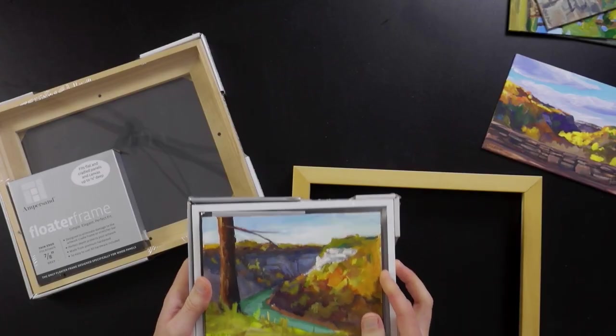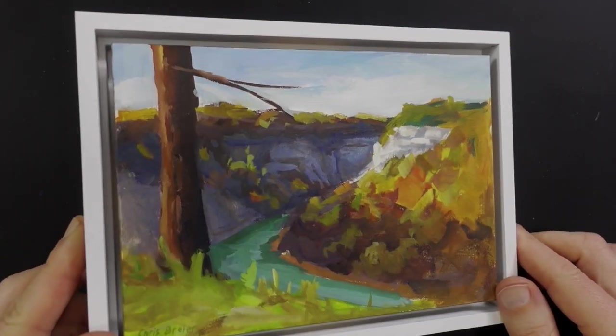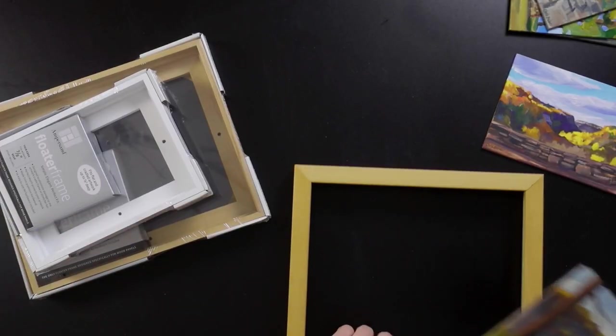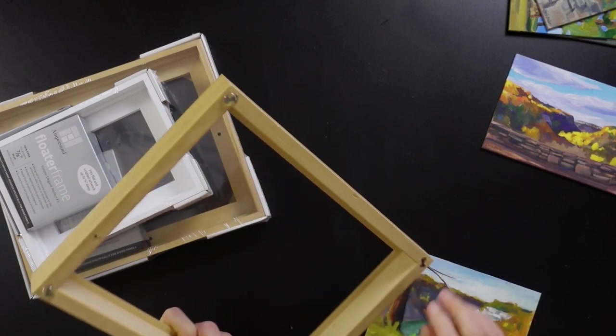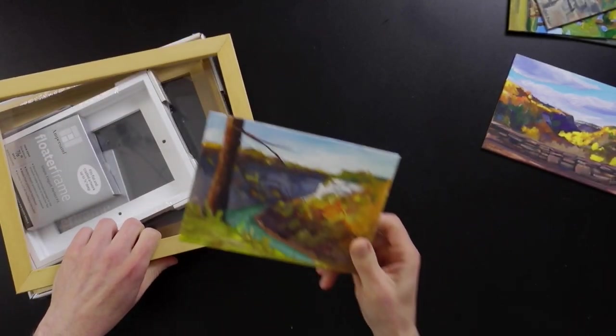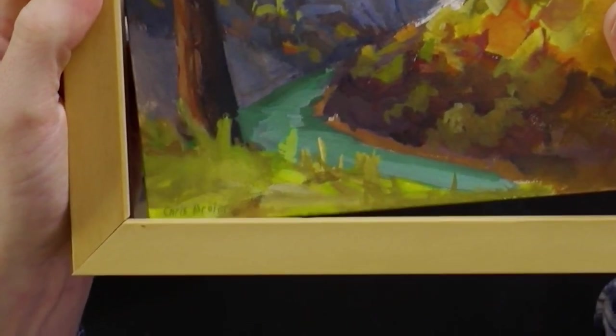The benefit of using the floater frame is that the full painting gets displayed, the edges don't get hidden. If you look at a regular frame it has a recessed edge called a rabbet that hides maybe a quarter inch of the painting. So if you look at a small painting like this, my signature is down here, that actually covers it up and hides part of the painting.